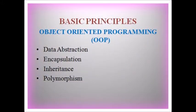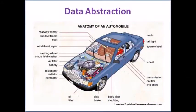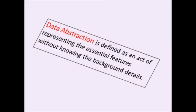The most important basic principles of OOP are data abstraction, encapsulation, inheritance and polymorphism. Let's understand data abstraction with the help of an example of a car. When you drive a car, you see the steering wheel, accelerator, clutch and brake — you are not bothered about how they are designed to do their functions. Similarly, in OOP only the essential information about the data is known to the outside world. We can define data abstraction as an act of representing essential features without knowing the background details. In other words, hiding the background details or the implementation of the code in order to reduce complexity is known as data abstraction.